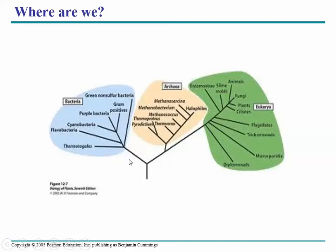There's domain bacteria, which we talked a lot about in Chapter 27. Then there's domain archaea, which we also talked about in Chapter 27. Hopefully you'll recall that both bacteria and archaea are comprised solely of prokaryotic cells. So now we finally make our segue into domain eukaryote.